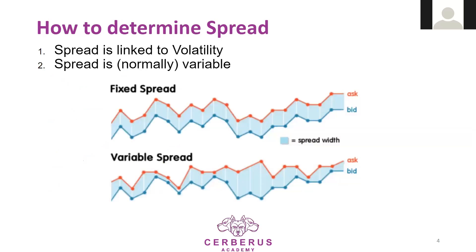You will see that some brokers offer a fixed spread and others offer a variable spread. Spread is linked to volatility, so normally it is variable. If someone is offering a fixed spread it means it is a high one, because they have to cover the expenses for high volatility periods.